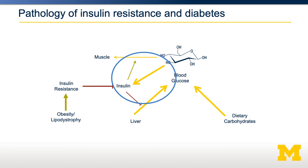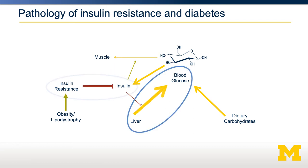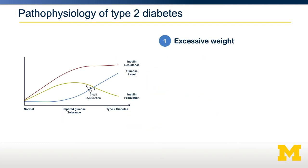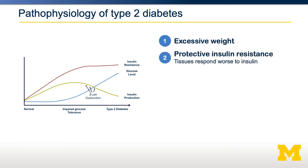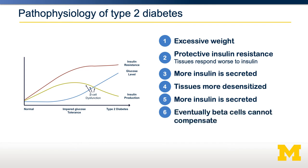As insulin levels increase, insulin resistance increases, which means more insulin needs to be produced. As this continues, insulin is less and less able to promote glucose disposal and suppress glucose production. In summary, excess weight results in insulin resistance, meaning tissues respond worse to insulin. In response, the body makes more insulin to keep blood glucose in a normal range. However, insulin secretion is associated with more insulin resistance — there's an arms race where insulin resistance keeps increasing and insulin production keeps increasing to match it. This can't continue indefinitely, and at some point the pancreatic beta cells cannot produce enough insulin to maintain blood glucose, so glucose levels will rise.